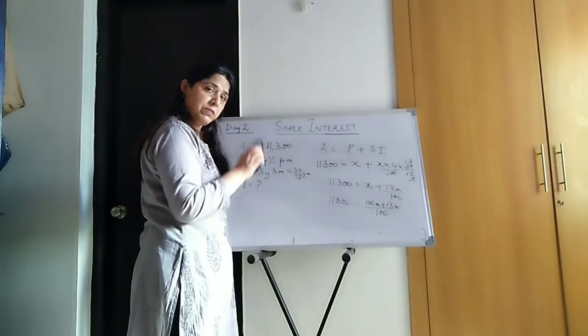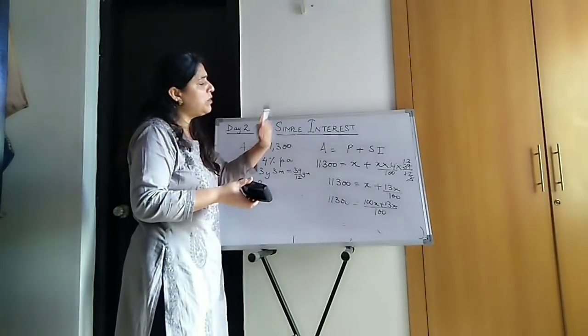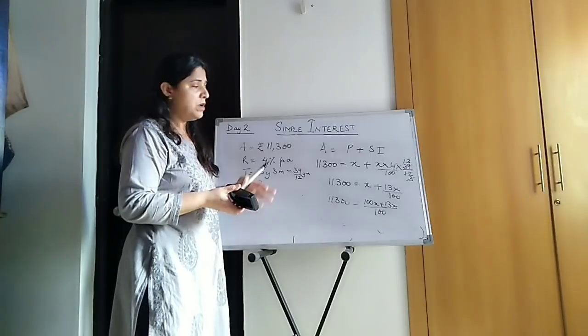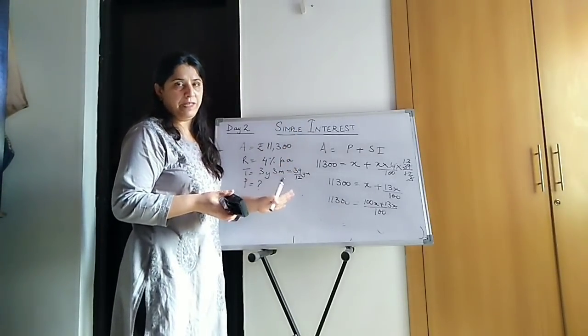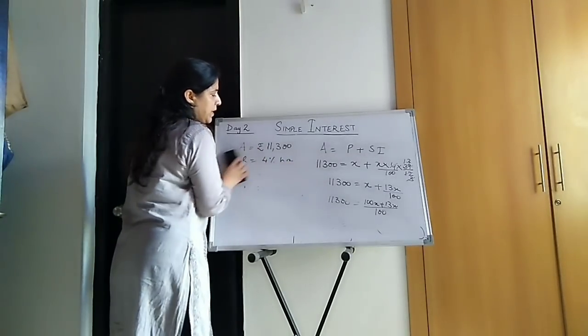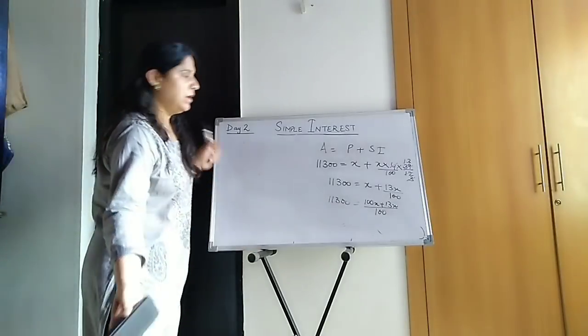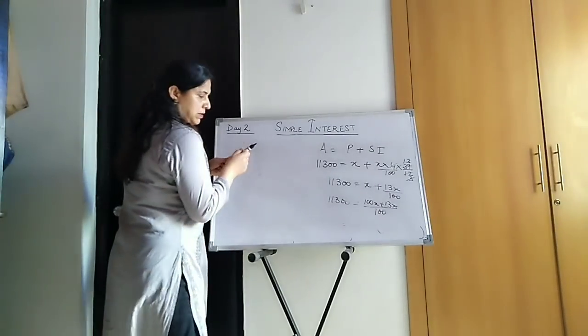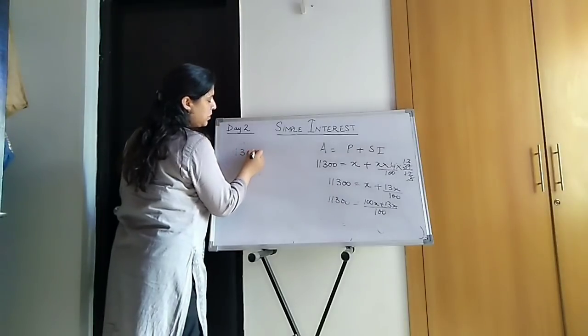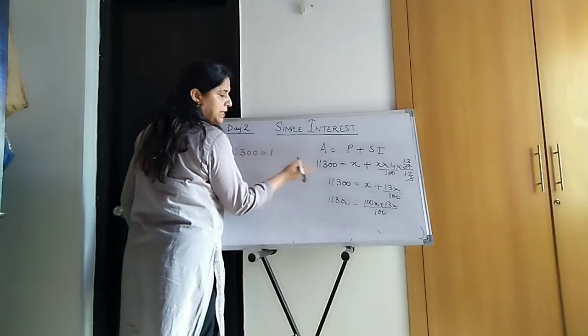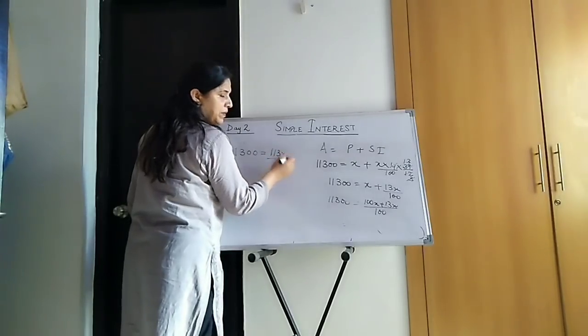When the amount is given, rate and time or any other, and we are asked to find principle or the rate or the time, whatever they are asking you, and amount is given, then we will do it in this manner. This is the easiest way. And time has to be converted to years if anything is in months. So this becomes 11300 is equal to 113X upon 100. So how to find X?